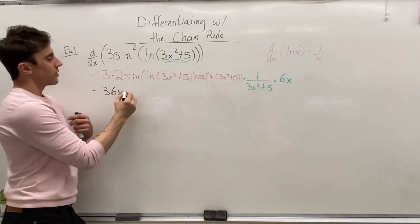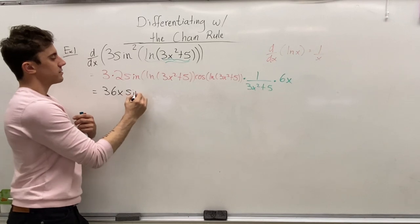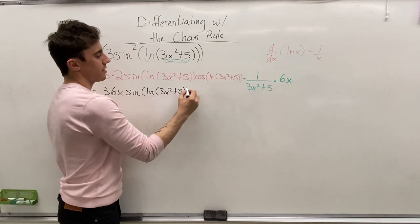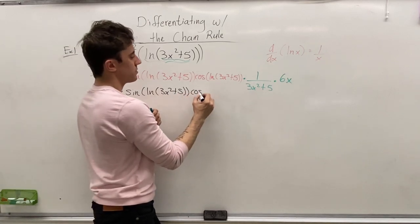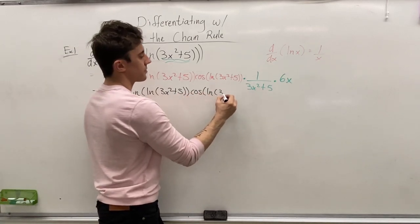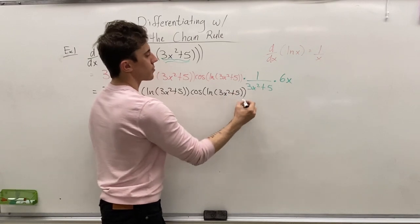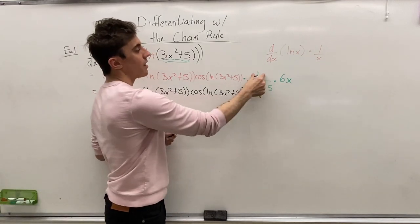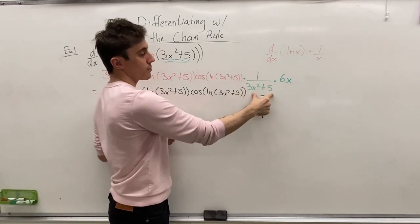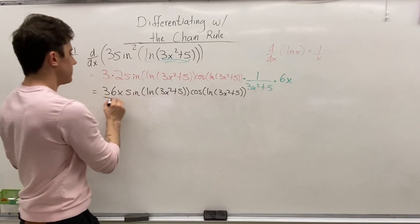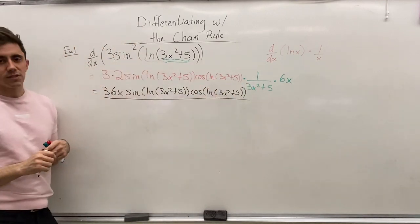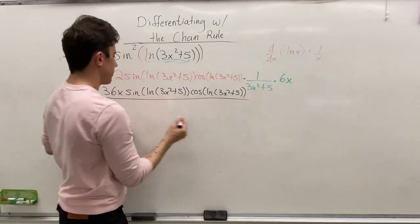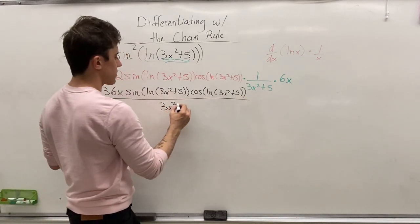Next, we'll move on. So, we'll have the sine of the ln of 3x squared plus 5 times the cos of the ln of 3x squared plus 5. Making sure our brackets are always properly written. And now, we've taken care of the 6x times 1 over 3x squared plus 5 can be incorporated into our expression as simply writing it over a denominator of 3x squared plus 5. And so, that will finish things off for us.